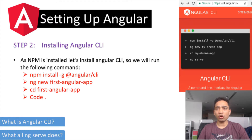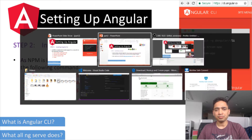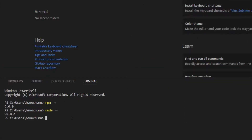To install Angular CLI using NPM, the command is: 'npm install -g @angular/cli'. The '-g' flag stands for global installation, so you have to install it once at the global level and you don't have to install it again. Let's go back to the code editor and run this command. I'll type 'npm install -g @angular/cli' in the terminal.